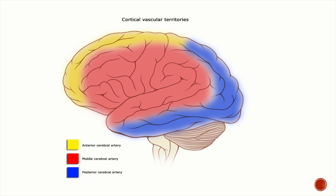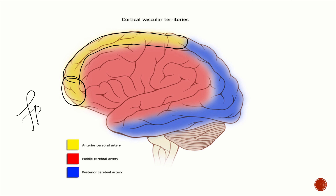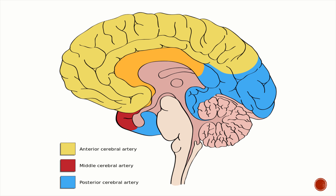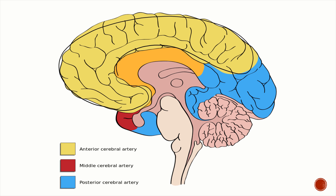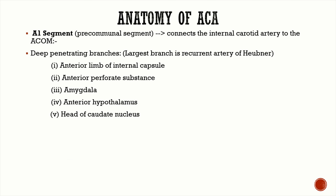This is the lateral surface of the cerebral hemisphere. The frontal pole is going to be supplied by the ACA, and the supramedial strip over the frontal and parietal cortices is going to be supplied by the anterior cerebral artery. On the medial surface, a major portion — the medial surface of the frontal lobe and parietal lobe — is supplied by the ACA, as is the anterior four-fifths of the corpus callosum.